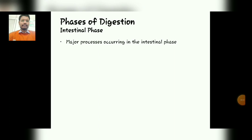Next, what are the major processes occurring in the intestinal phase? There are mainly three major processes: first is buffering, second is digestion, and third is absorption.